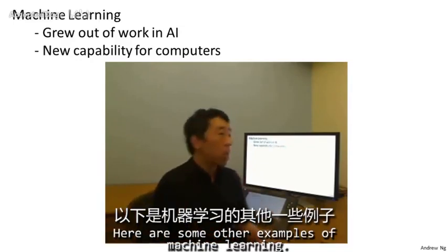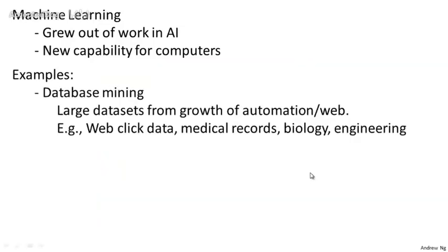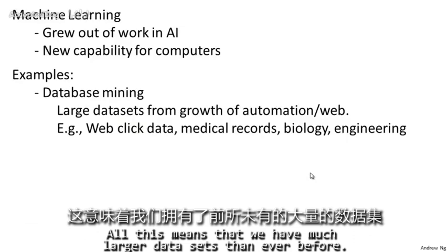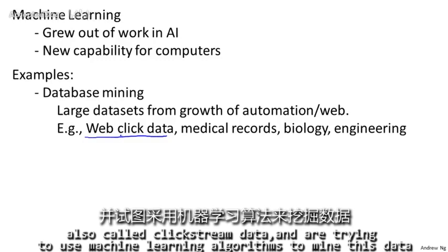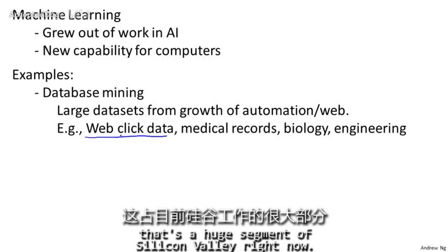Here are some modern examples of machine learning. There's database mining. One of the reasons machine learning is so prevalent is the growth of the web and the growth of automation, which means we have much larger data sets than ever before. For example, tons of Silicon Valley companies are today collecting web click data, also called clickstream data, and are trying to use machine learning algorithms to mine this data to understand and serve users better. That's a huge segment of Silicon Valley right now.